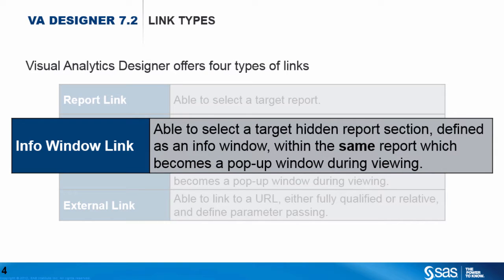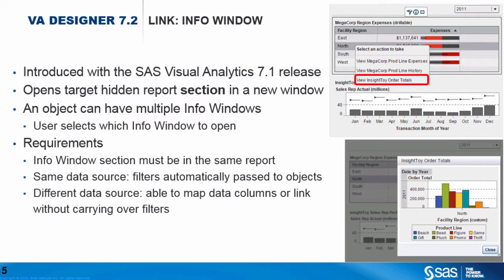Today we're going to focus on the InfoWindow link. InfoWindows were introduced with the SAS Visual Analytics 7.1 release. It opens a target hidden report section in a new window. An object can have multiple InfoWindows, and when viewing the report, the user will select which InfoWindow to open. Here are some requirements: the InfoWindow section must be in the same report. For the same data source, filters are automatically passed to objects. And for a different data source, you're able to map data columns or link without carrying over any filter values.